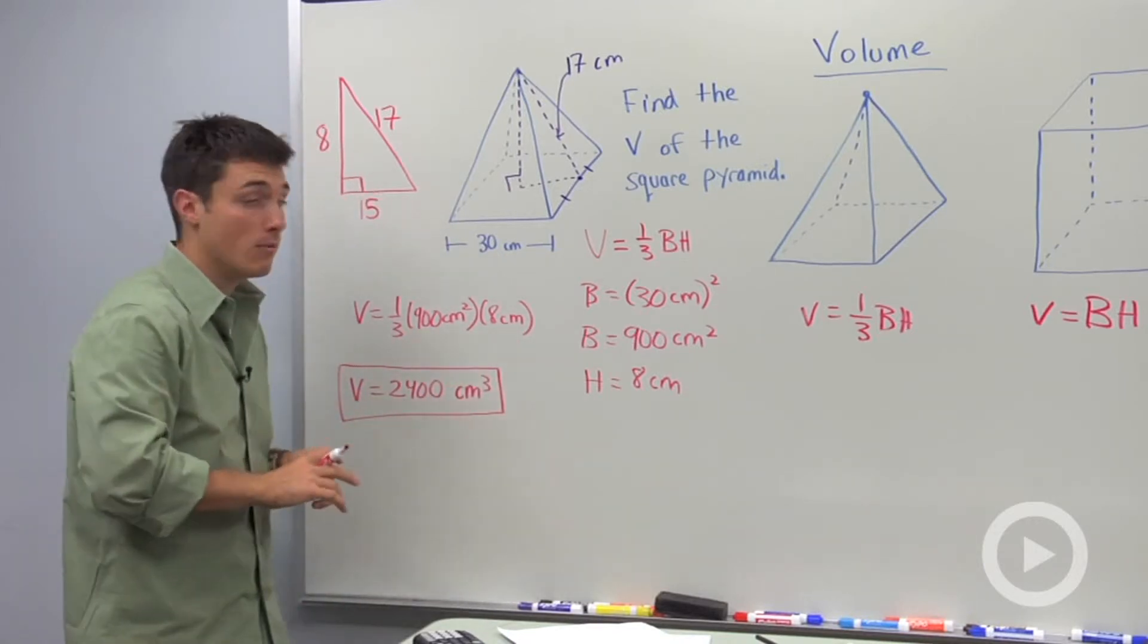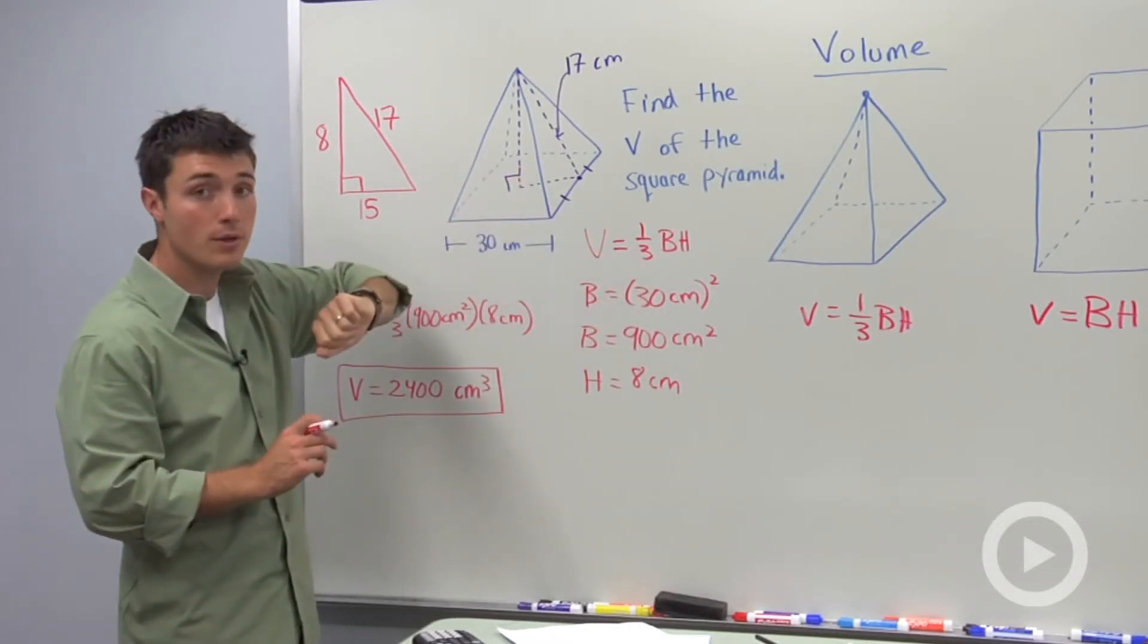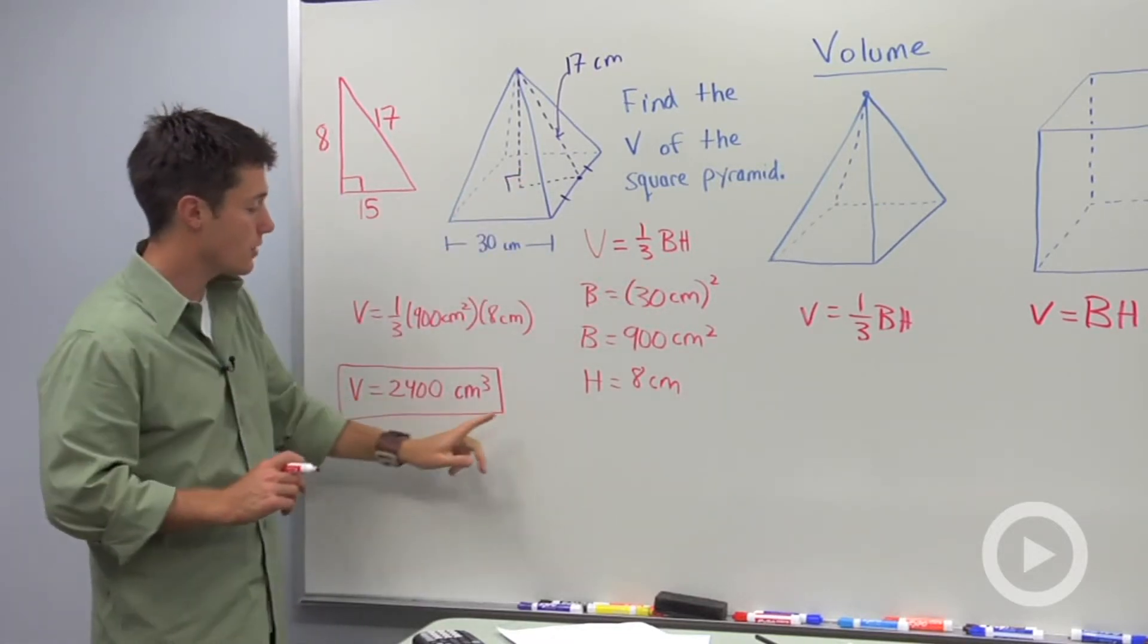So the key to this problem was not only realizing what your volume formula was, but that you could use the Pythagorean theorem to find your height, so that you could calculate your volume.